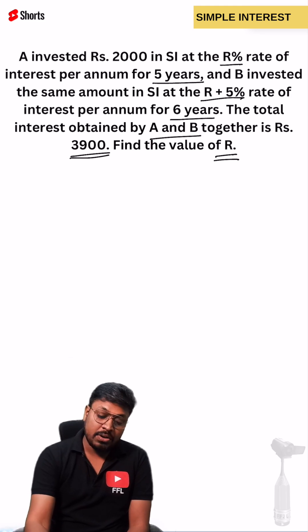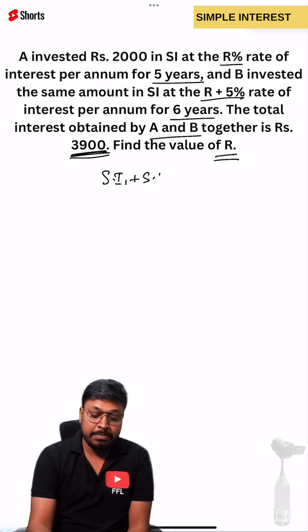In the question, we have a clue. The total interest was 3900, which means simple interest 1 plus simple interest 2 equals 3900.